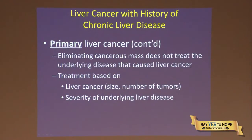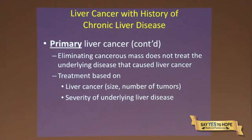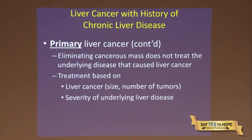Eliminating the cancerous mass does not treat the underlying disease that caused the liver cancer. Treatment of primary liver cancers is based on the liver cancer itself: how big it is, how many there are, which side of the liver it's on, whether it's throughout the liver or just on one side, and what the underlying liver disease is — for example, whether the patient has jaundice (yellowing of the skin and eyes), suggesting more functional impairment of the liver.